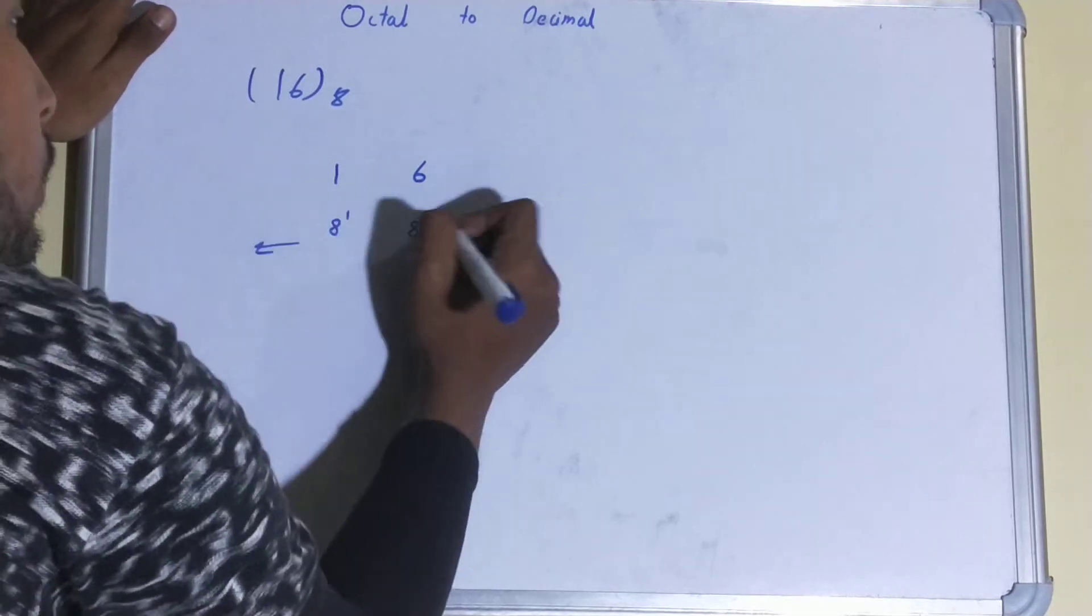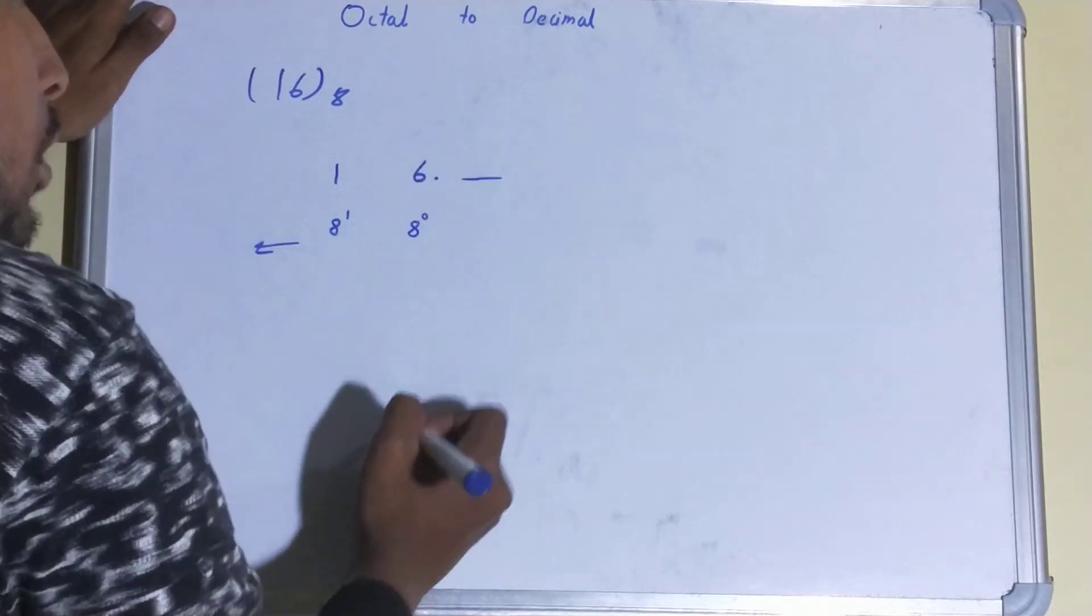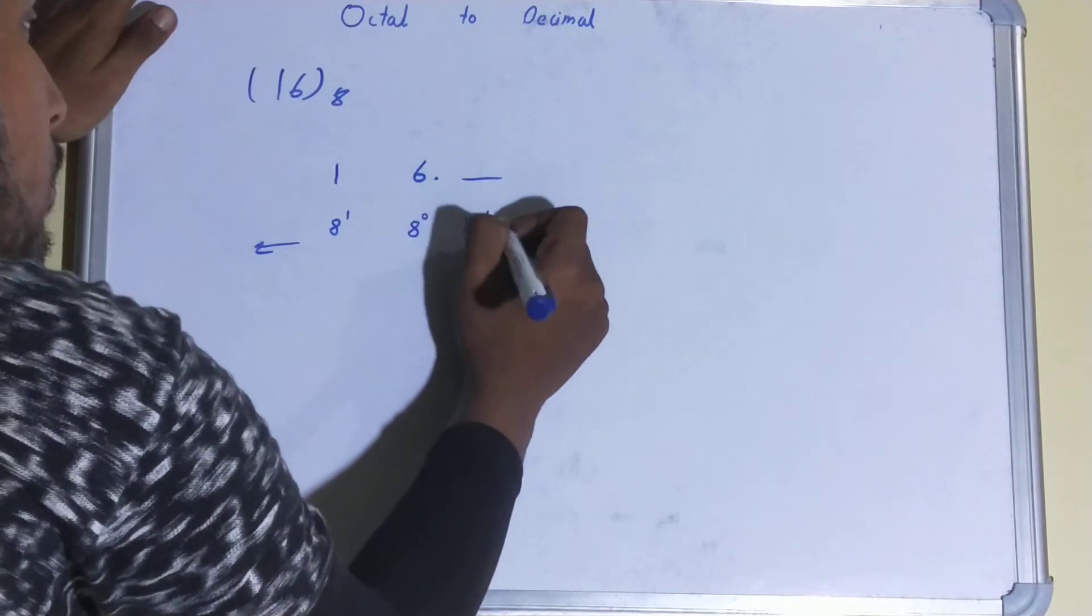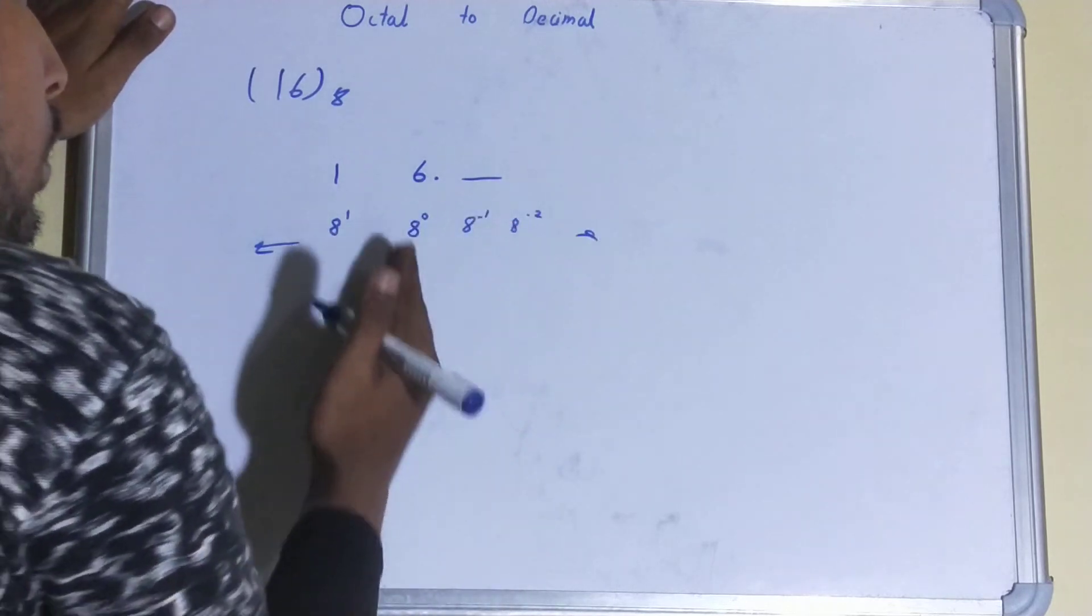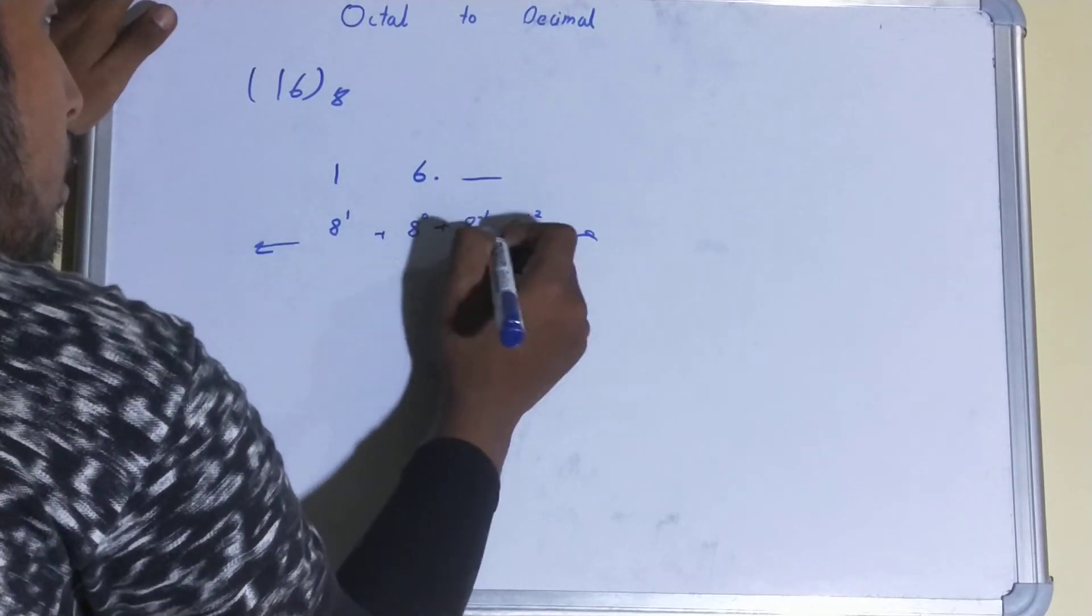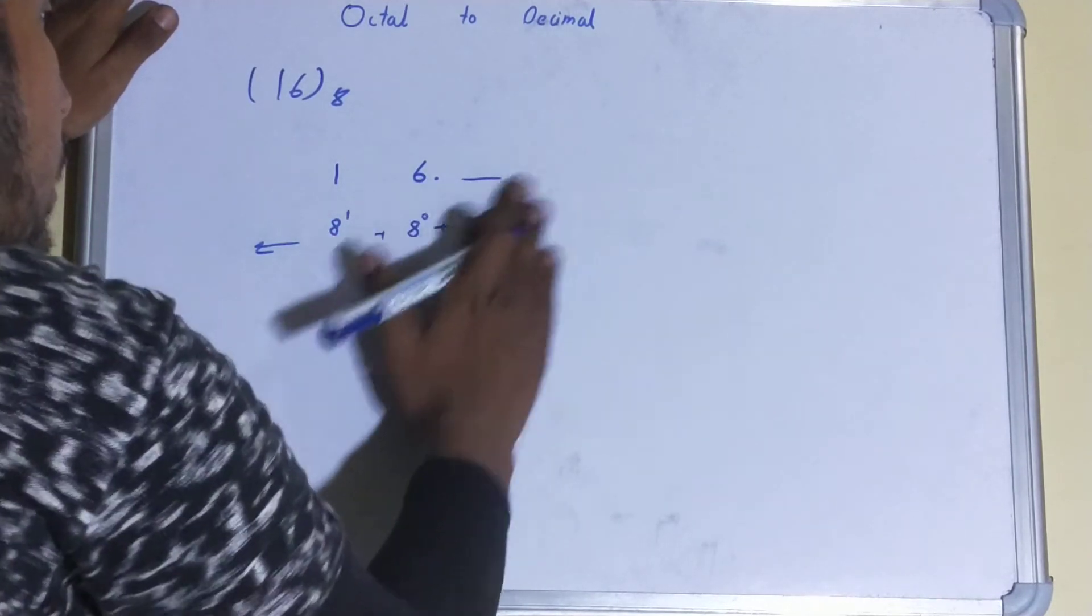And if there is a decimal and some value is there, then you will write it to the power minus 1, minus 2, and so on. What you will do is add all of them. So currently only two digits are there, so we will add these two.